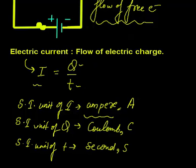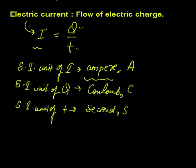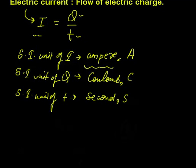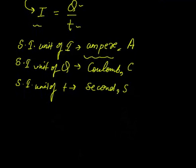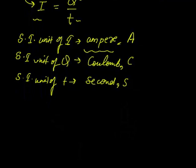So friends, I can define one ampere. If question is asked, can you define one ampere? So yes, I can define one ampere in this manner: one ampere is when one coulomb of charge flows through a circuit in one second, then the current flowing through it is said to be one ampere.